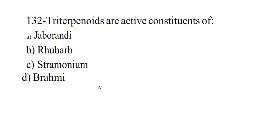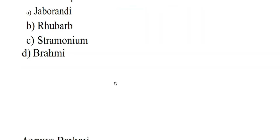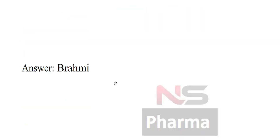Next question. Triterpenoids are active constituents of: Option A Jaborandi, Option B Rhubarb, Option C Stramonium, Option D Brahmi. Answer: Brahmi.